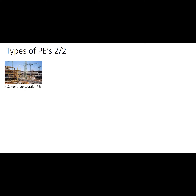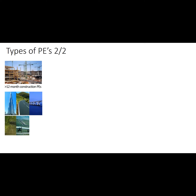A next type of PE is building sites, construction, and installation projects, provided that they last longer than 12 months. This type of PE includes buildings, roads, bridges, canals, pipelines, excavating, and dredging. It also covers the installation of complex machines and on-site planning and supervision. A 12-month test applies to each individual site or project. Two 11-month consecutive building projects on separate sites do not constitute a PE just because they last 22 months altogether.